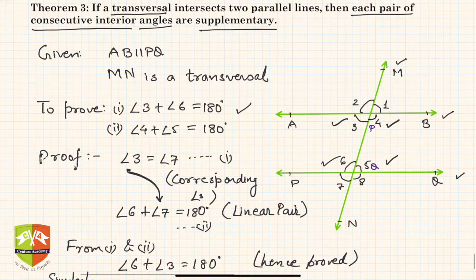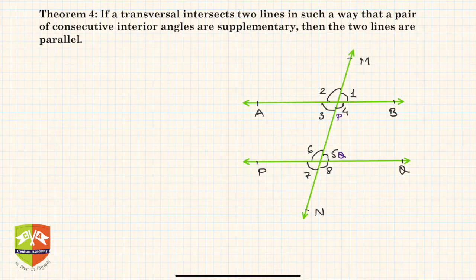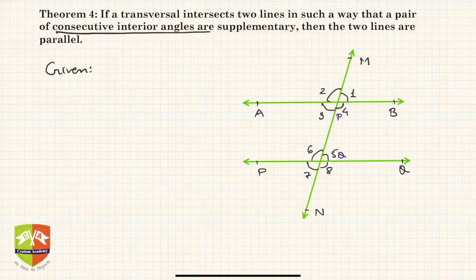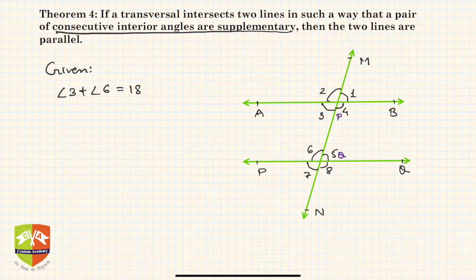Now let's look at the converse of this theorem. The converse states: if a transversal intersects two lines such that a pair of consecutive interior angles are supplementary, then the two lines are parallel. Given: consecutive interior angles are supplementary, meaning angle 3 plus angle 6 equals 180 degrees.